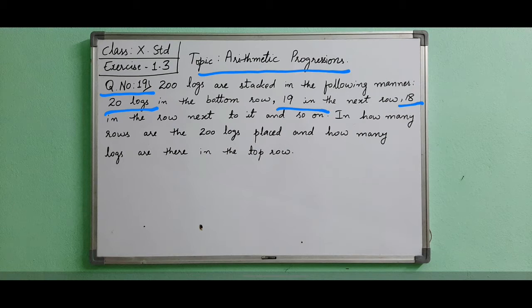So we need to find two things. First, how many rows, which means we have to find n, and how many logs are there in the top row. Top row means the last term. We have to find the last term as well as n here. We will see first what the question is.